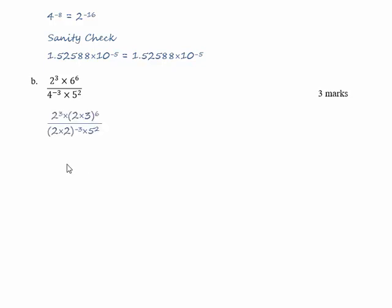Now let's look at the powers. We've got two to the three, two to the six, and two times two to the minus three which will be two to the minus six — and when we move that onto the numerator it'll become two to the plus six. So with the twos we've got six plus six is twelve, plus three is fifteen. Then we've got three to the six and five to the minus two. So our answer is two to the fifteen times three to the six times five to the minus two.